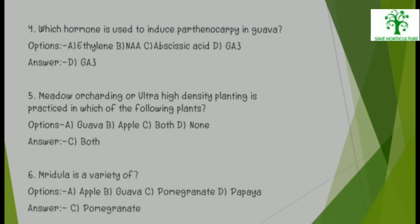4. Which hormone is used to induce parthenocarpy in Guava? Options: Ethylene, NAA, Abscisic Acid, or GA3. The right answer is GA3.